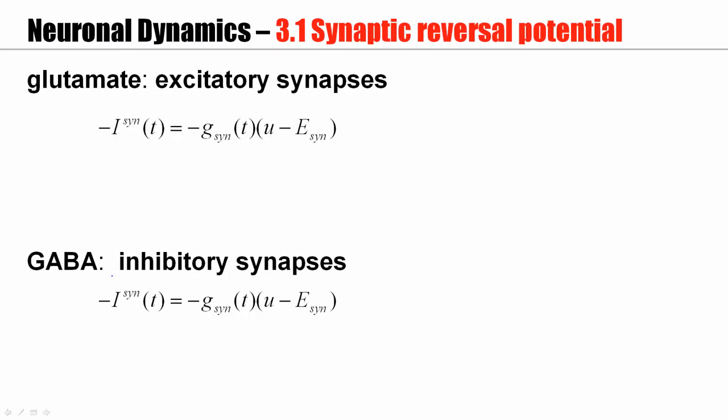So, let me summarize. So, we have the neurotransmitter glutamate at excitatory synapses. We have the neurotransmitter GABA at inhibitory synapses. And both are described by the same kind of equation. However, there's a difference, because the reversal potential at excitatory synapses is high, whereas the reversal potential at inhibitory synapses is low.